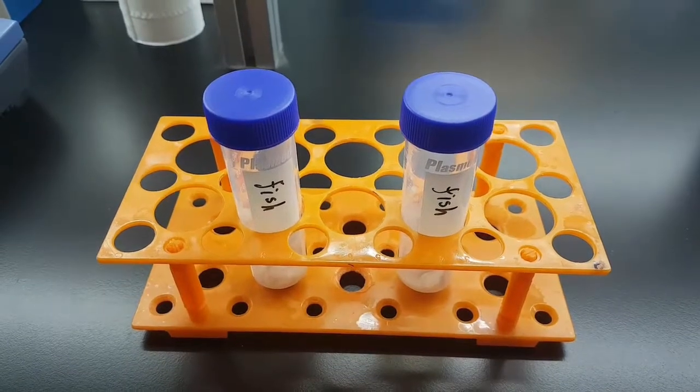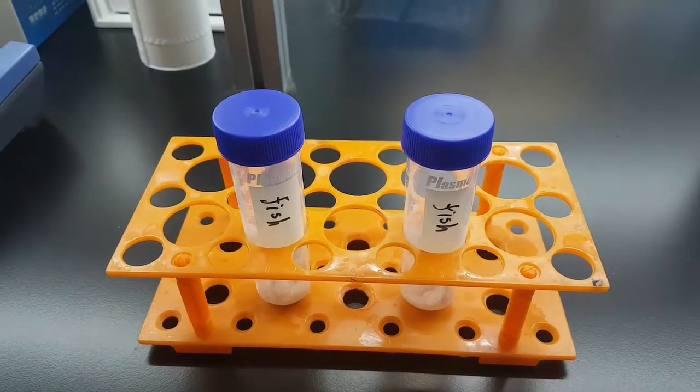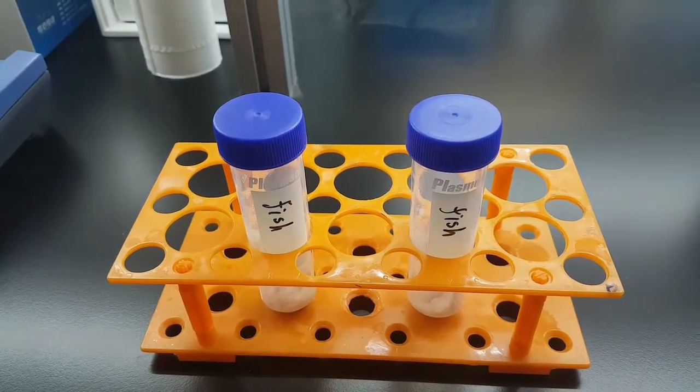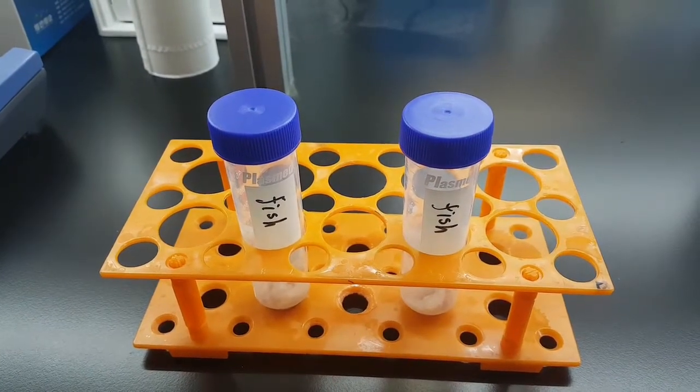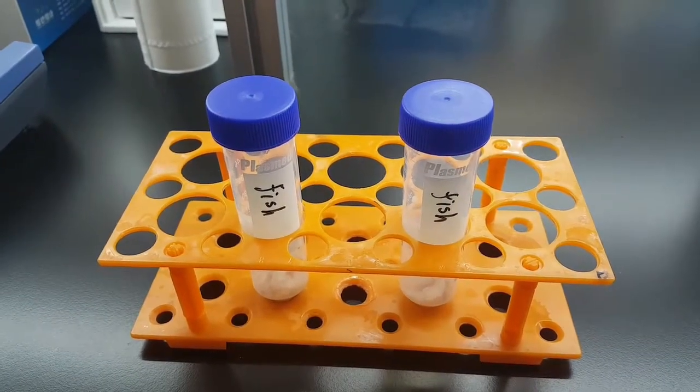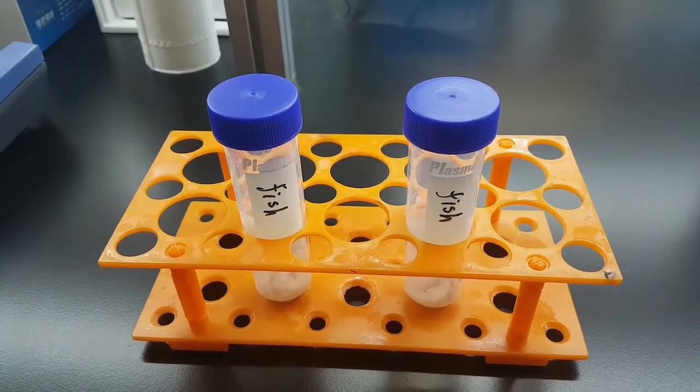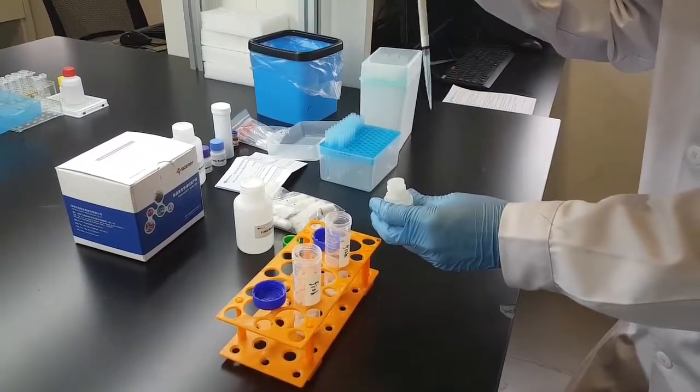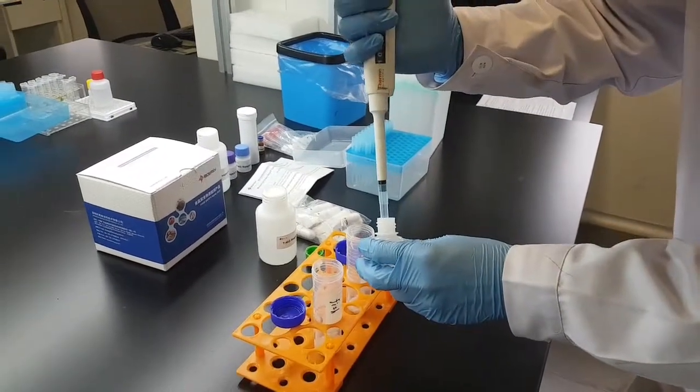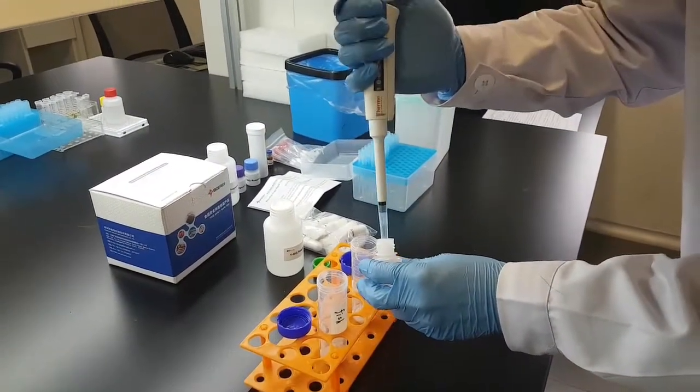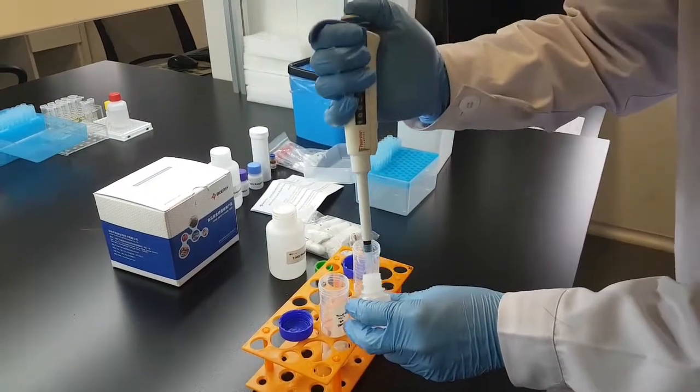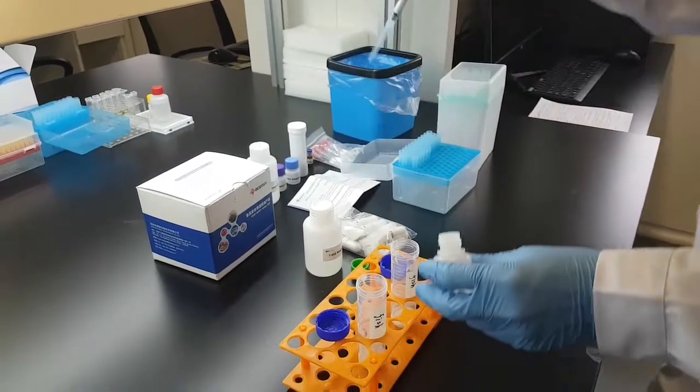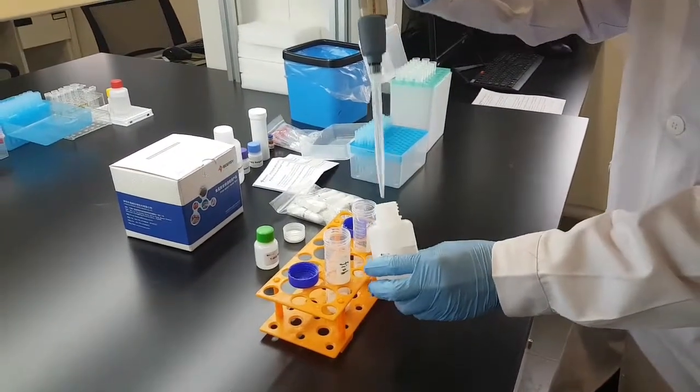For sample preparation, we have already prepared two samples which are fish samples. We weighed six grams of fish and put it into a 50 milliliter centrifuge tube. Now we take two milliliters of reagent A and five milliliters of reagent B.